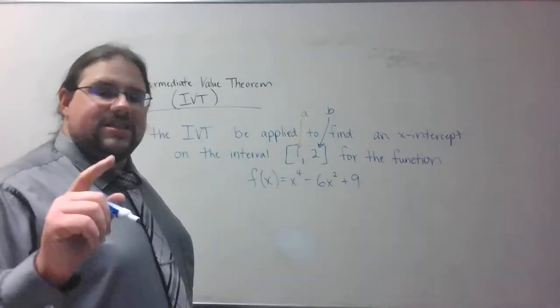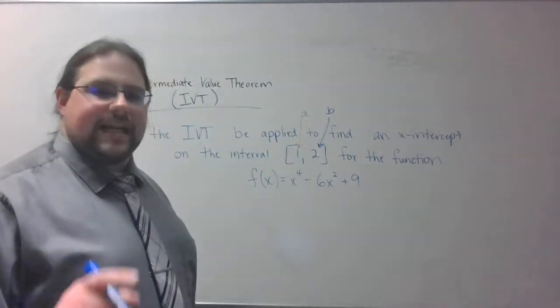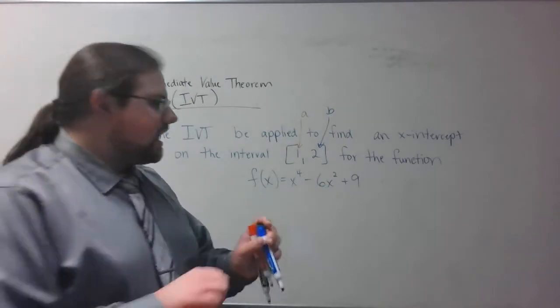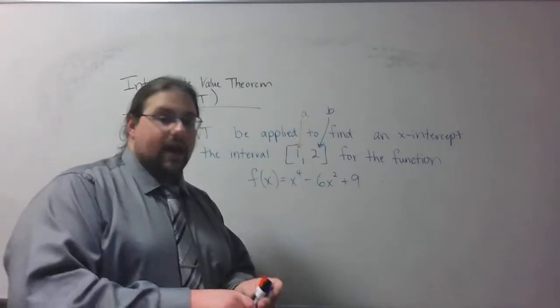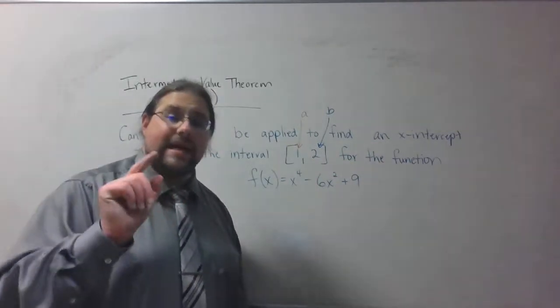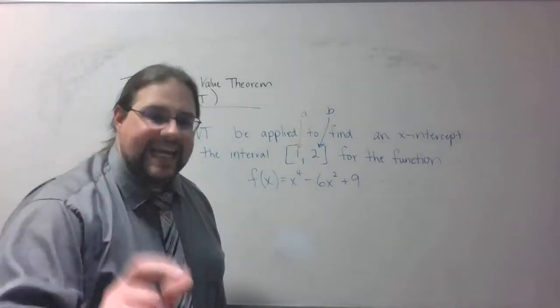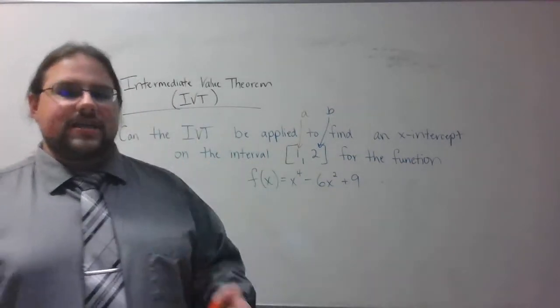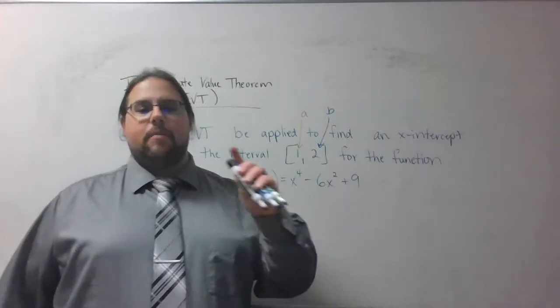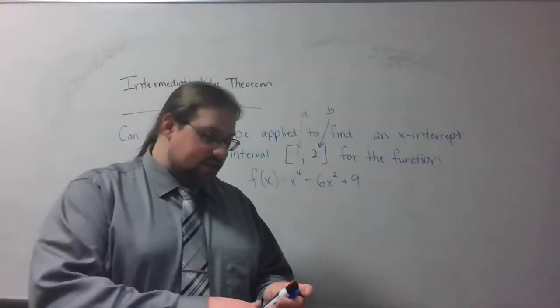I want to see, is there an x-intercept? An x-intercept is where y = 0. Is there going to be an x-intercept necessarily between 1 and 2? Now, fun fact, I already know that there is an x-intercept between 1 and 2. The question is, does the Intermediate Value Theorem help me with that? Let's find out.